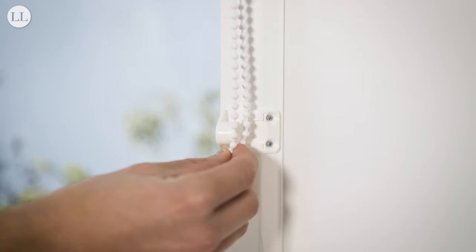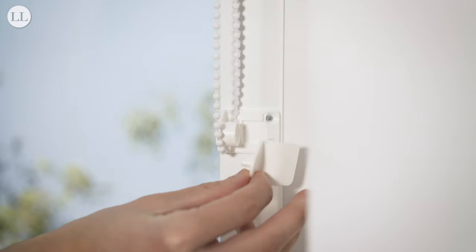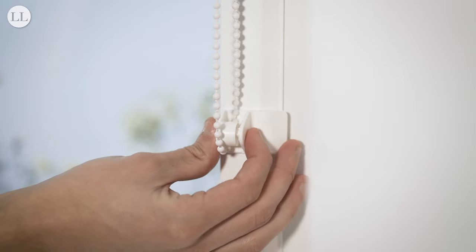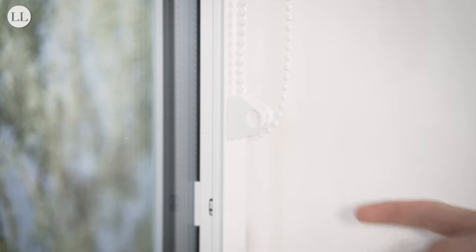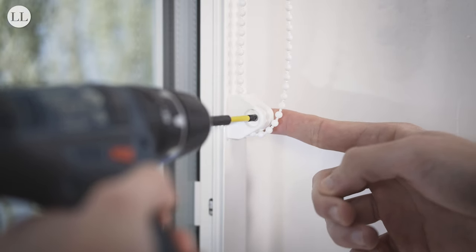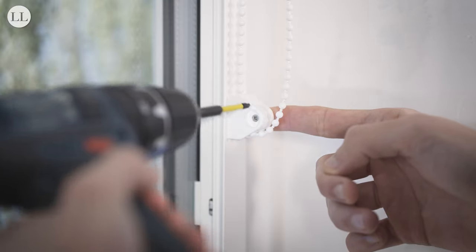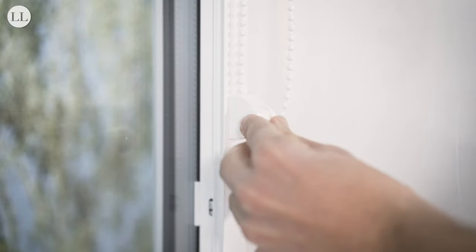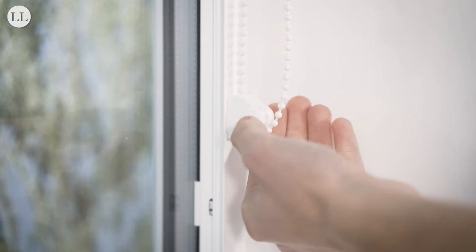When secure, wrap the chain around the cord tidy and secure it. Insert the screw into the cord tidy and cover it with the cover cap. Check the operation of the blind.